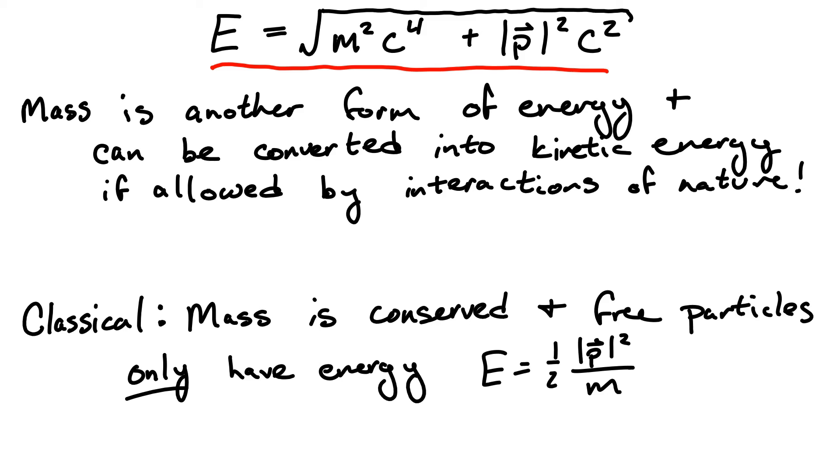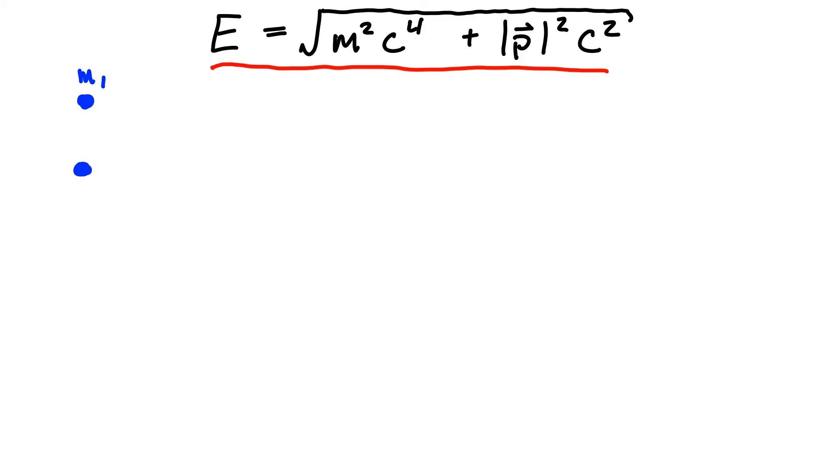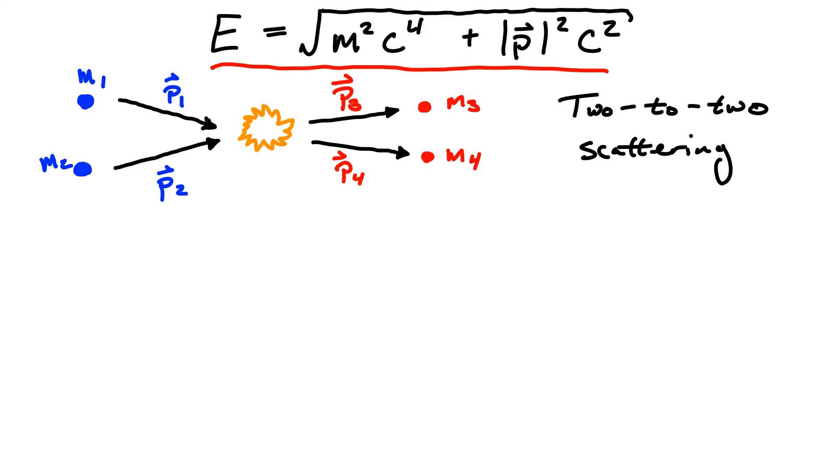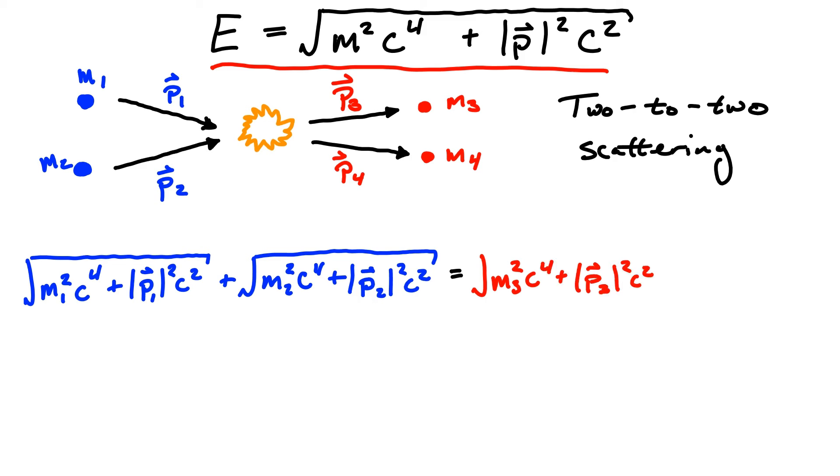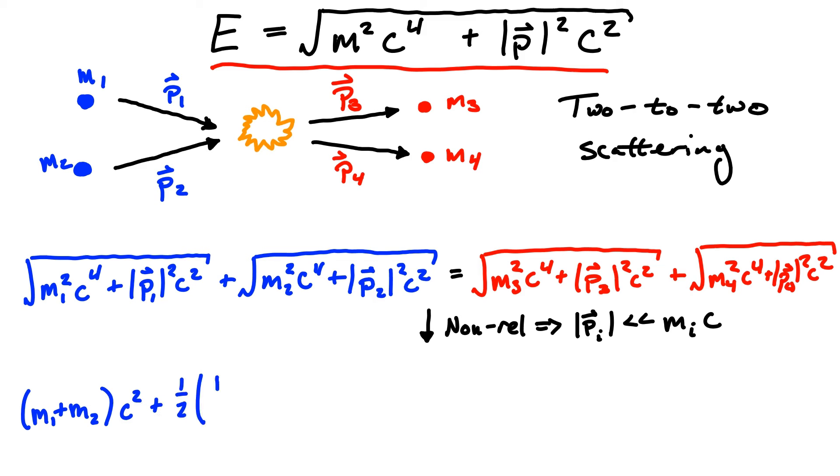Interestingly, we can actually prove this with our relativistic equation of energy. We'll consider the case of 2 to 2 scattering where we start with two particles of mass m1 and m2 with momenta p1 and p2 which collide and produce two new particles with masses m3 and m4 and momenta p3 and p4. Starting with our relativistic version of conservation of energy for this reaction, we'll consider the non-relativistic limit where the kinetic energy due to the particles having non-zero momentum is much smaller than the energy due to the rest mass of that particle.